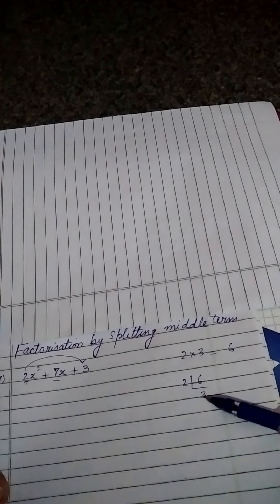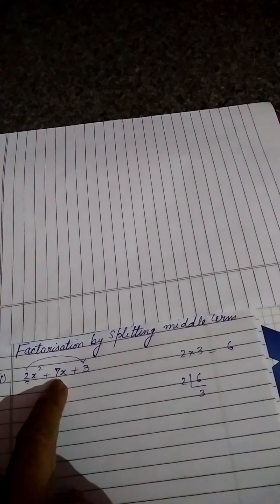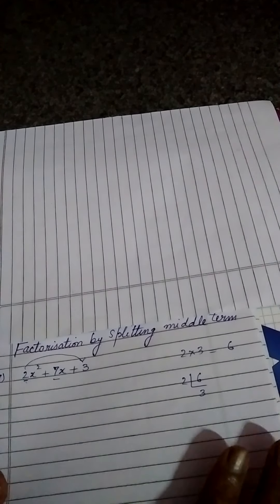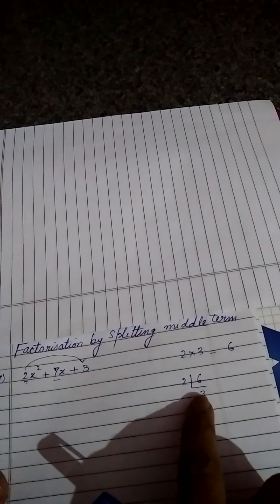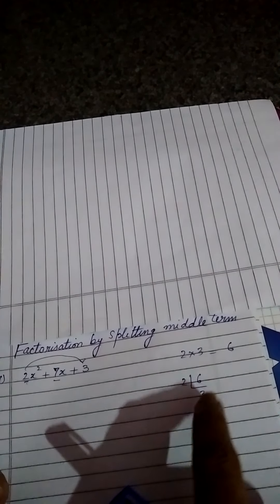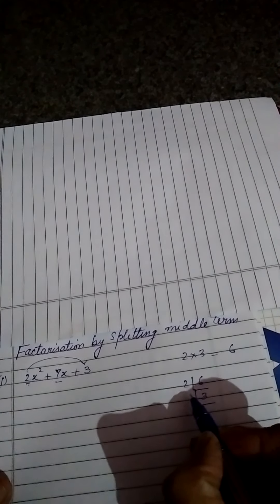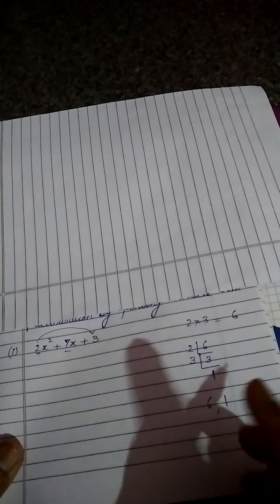Now see here, if you add 3 plus 2, 5 will come. But we want here 7. When you multiply 3 into 2, 6 will come. But we want to complete or satisfy both the conditions. After multiplication, 6 is coming, but after addition, 7 is not coming. So we will move ahead. Now this 3 will be going on 3's table. 3 ones are 3. Now see, 3 twos are 6. And this is 1. If you add 6 and 1, you will get 7. And when you multiply 6 and 1, you will get 6. So here both the conditions are satisfied. So its factors will be 6 and 1.